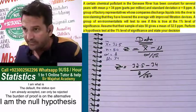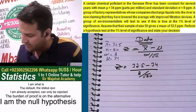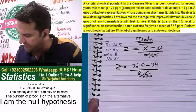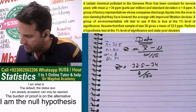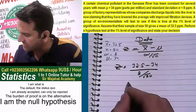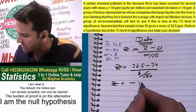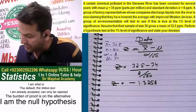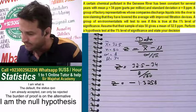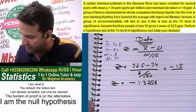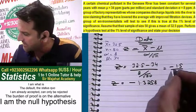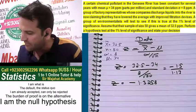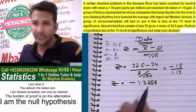I will compute this using a scientific calculator. 32.5 minus 34 is -1.5, divided by 8 divided by √50, which gives 1.13. So -1.5 divided by 1.13 equals -1.327. We take this value as it is more accurate. So the calculated Z value is approximately -1.3258.